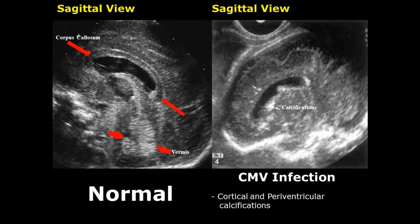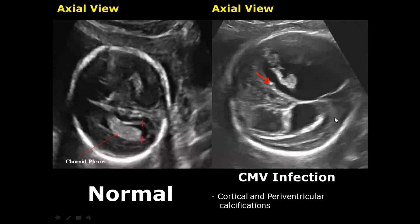CMV infections — from cytomegalovirus — can occur in the fetal brain and present as calcifications in the brain tissue. Here you can see small calcifications; when such calcifications are noticed, it can indicate a CMV infection. Here is another axial view showing small calcifications in a CMV infection.